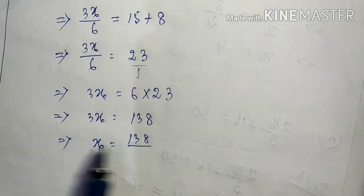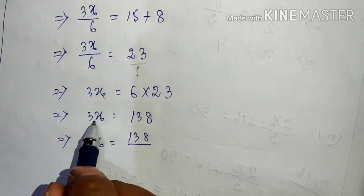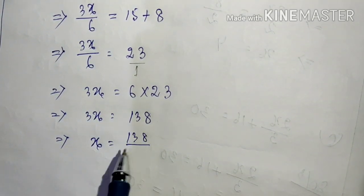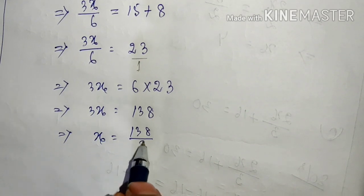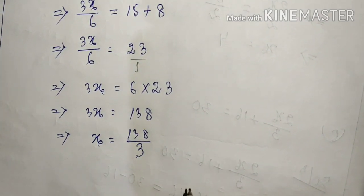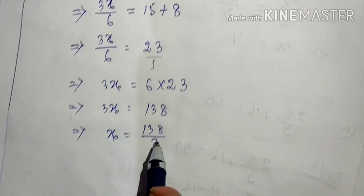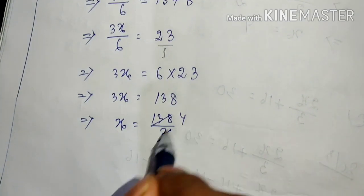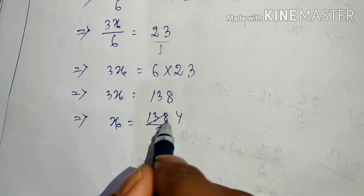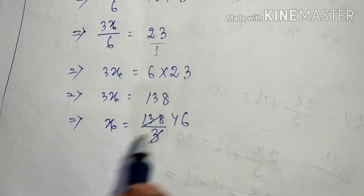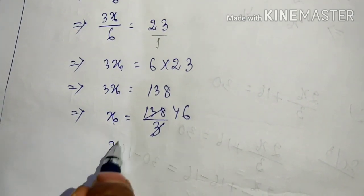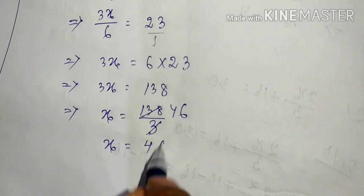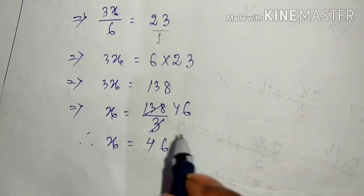We have 3x = 138. Whatever is with the variable, we take it to the other side. Dividing both sides by 3: 3 cancels, giving x = 46.